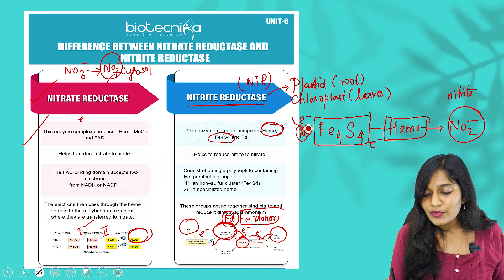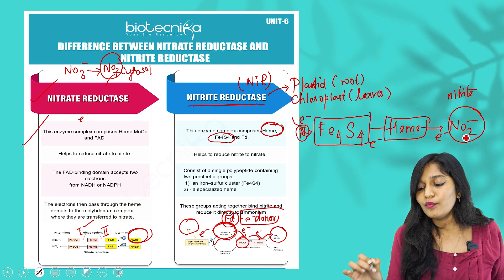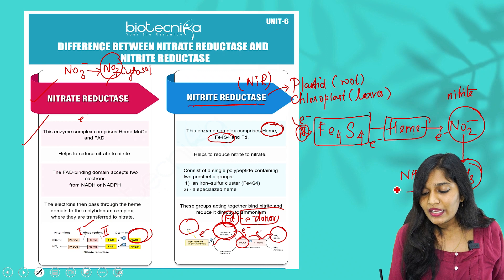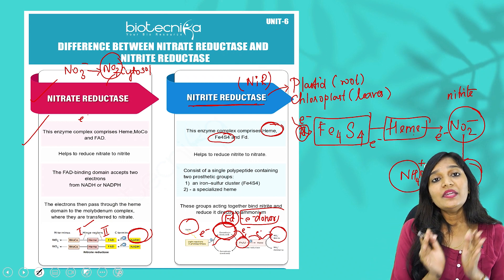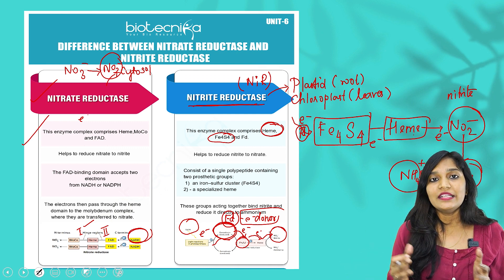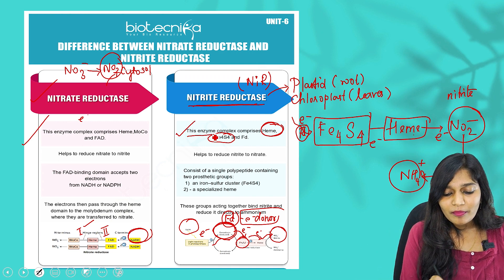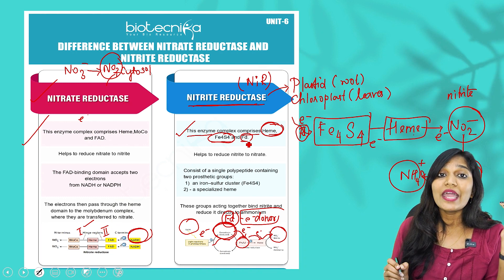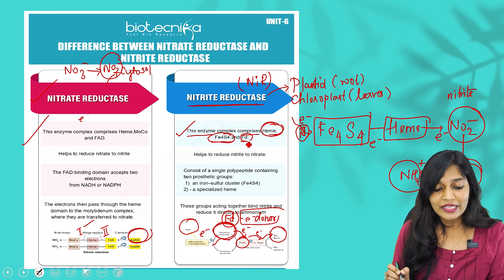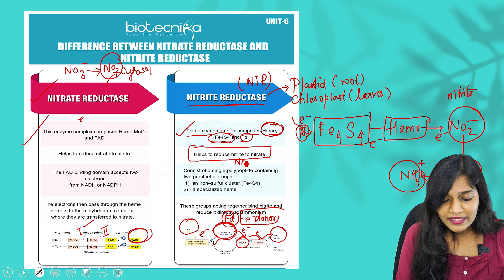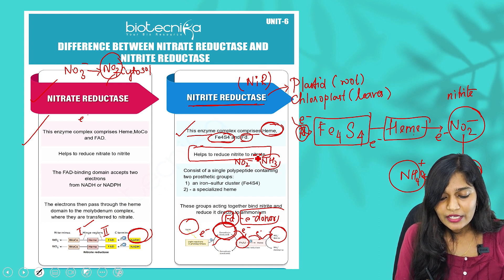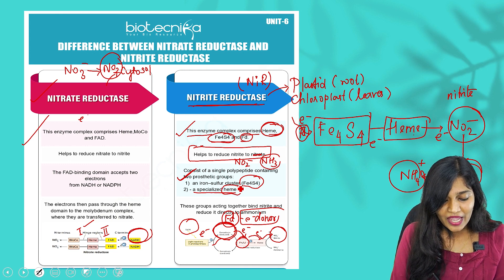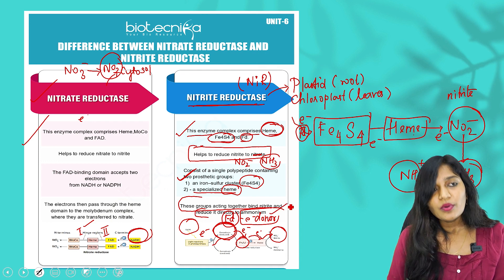The electrons flow from ferredoxin → Fe₄S₄ → heme → NO₂⁻, and this ultimately converts nitrite into ammonia, which then becomes ammonium ions. These ammonium ions, formed in the plastids and chloroplasts, can be converted into amino acids and ultimately used for protein synthesis. To summarize this enzyme: the complex comprises heme and Fe₄S₄; ferredoxin is the electron donor; the electron acceptor is nitrite (NO₂⁻); and the two prosthetic groups are Fe₄S₄ and a specialized heme, which together are responsible for binding and reducing nitrite to ammonium ions.